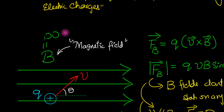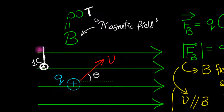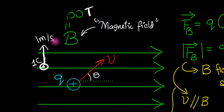So now you understand what it means when the magnetic field at some point is 100 Tesla: if you take a 1-coulomb positive charge and shoot it perpendicular to the field at a speed of 1 meter per second, that charge will experience a force of 100 newtons. That's what a magnetic field value means, and that's the definition.